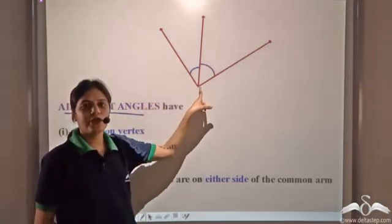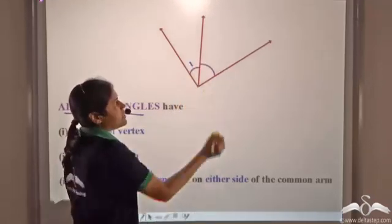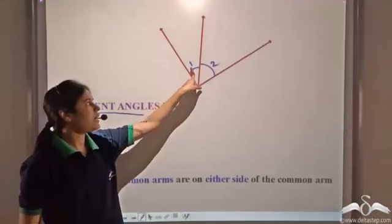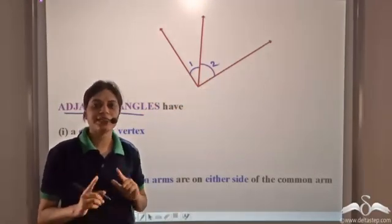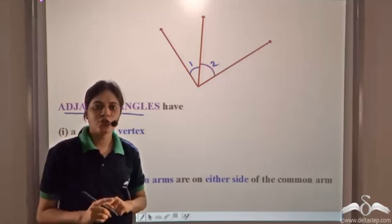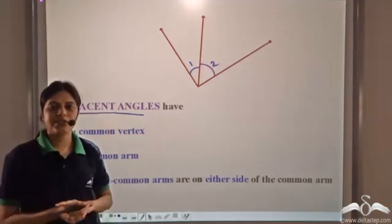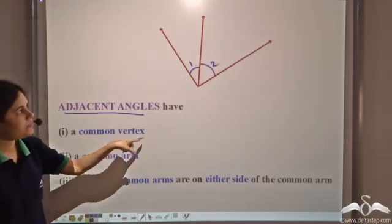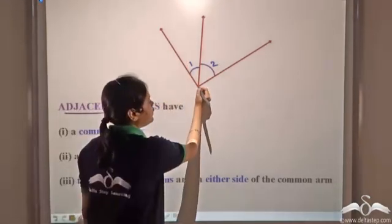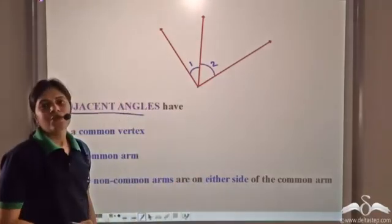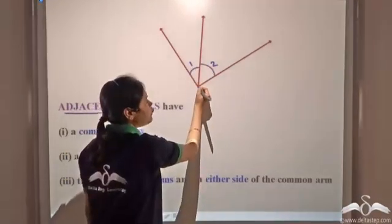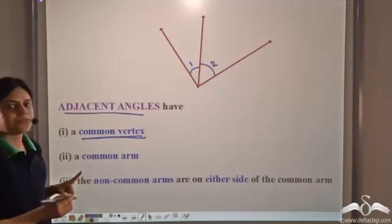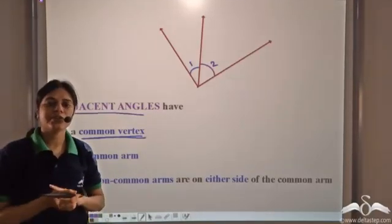If you look at these angles, let us call this angle one and this angle two. Angle one and angle two are placed next to each other, so we can say that these are adjacent angles. Adjacent angles have a common vertex. The vertex of angle one and the vertex of angle two are the same point — so they share the same vertex.